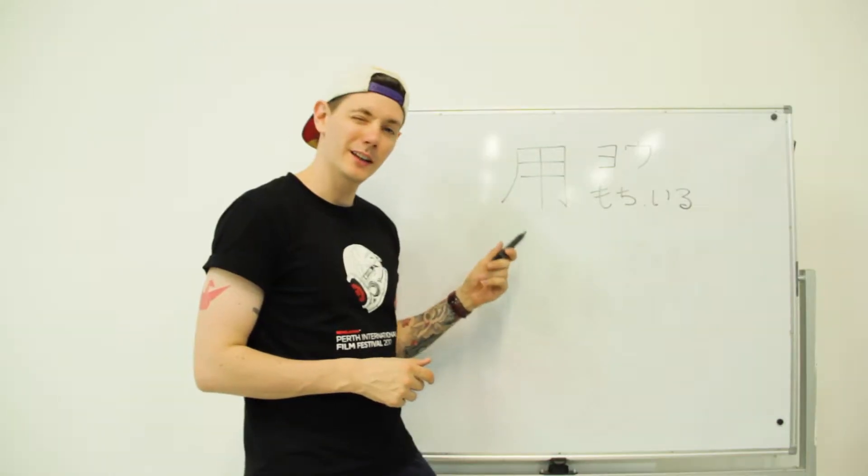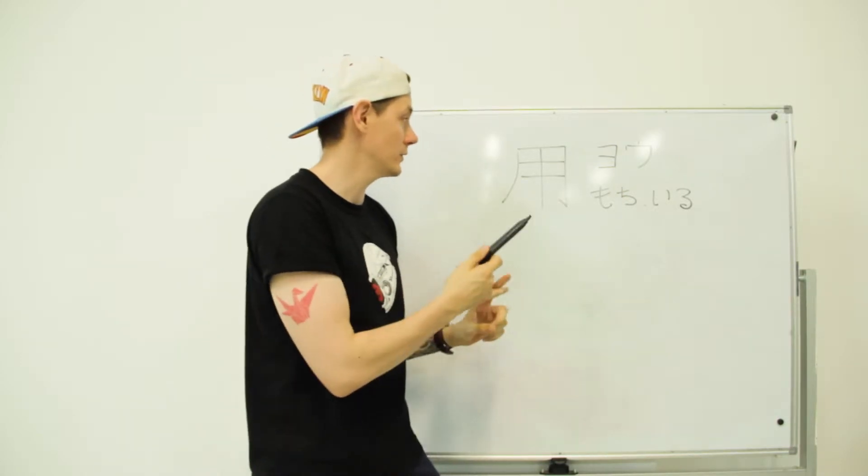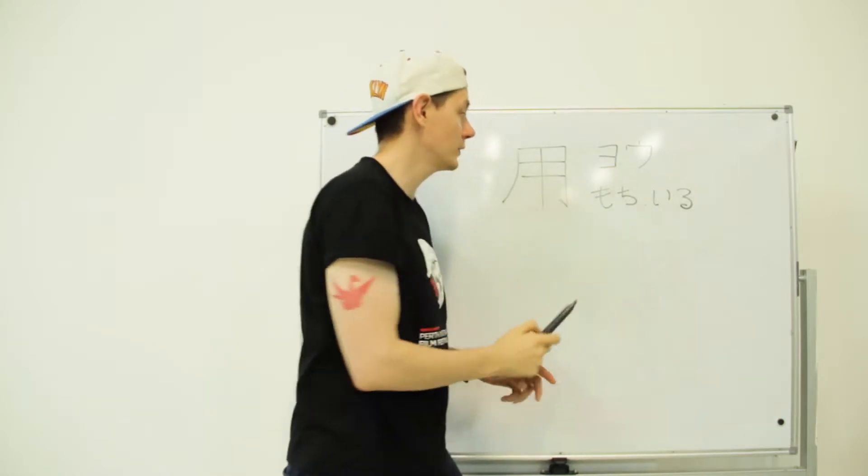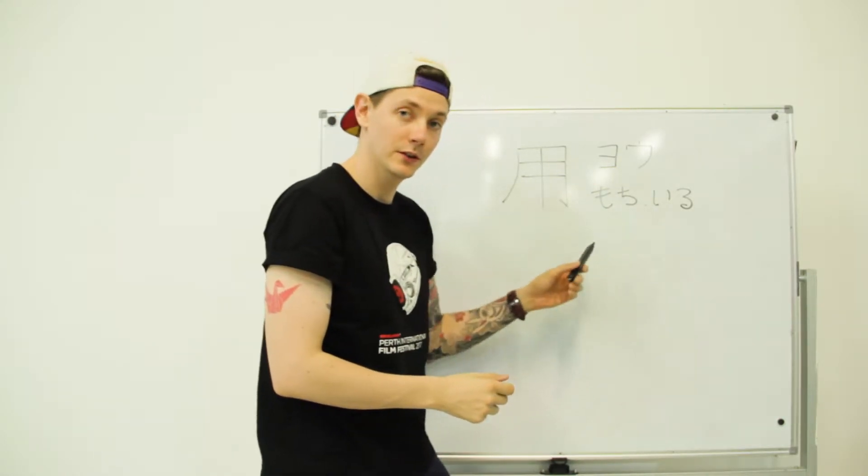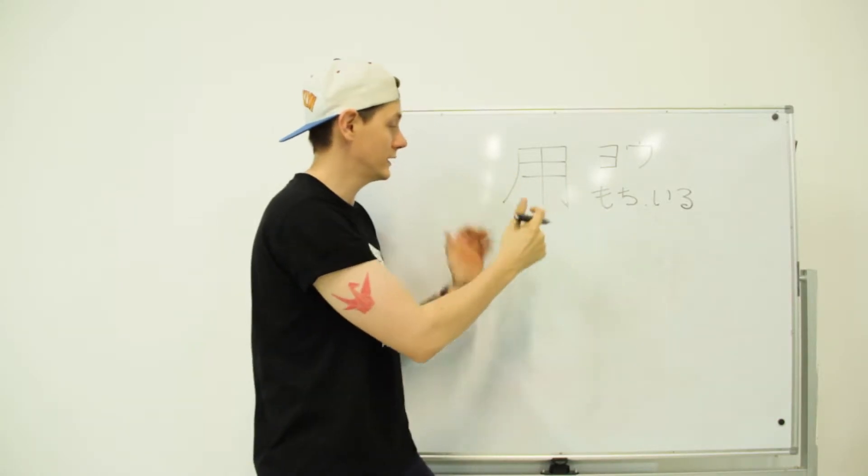Next we have the 107th most commonly used Kanji. You'll be seeing this one a lot too. It's a Kanji for use or task. The onyomi reading is yo, and the kunyomi reading is mochi from mochi iru. Essentially the shape looks like two moons joined together.